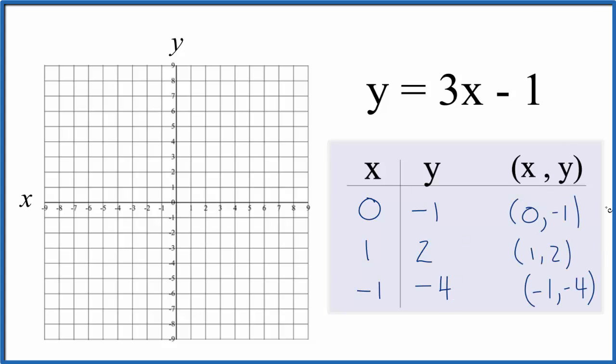So these are the points that we'll graph for the equation y equals 3x minus 1. Let's start off with 0, x is 0, and y is minus 1 right there. So that's our first point.